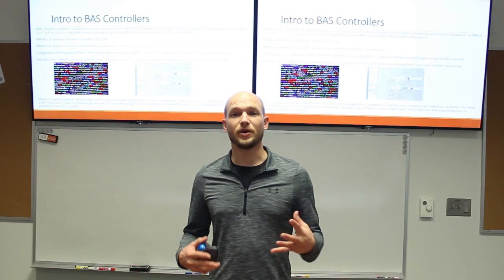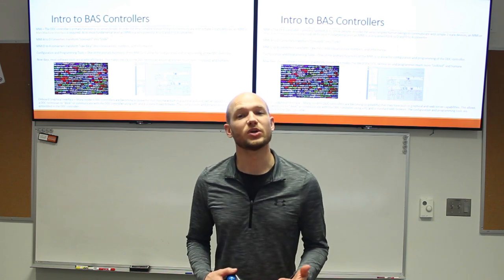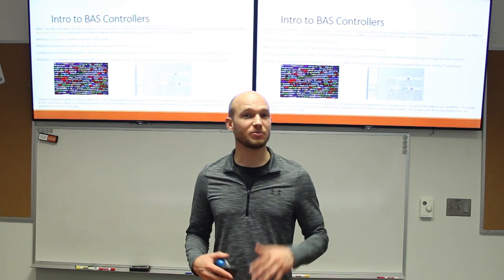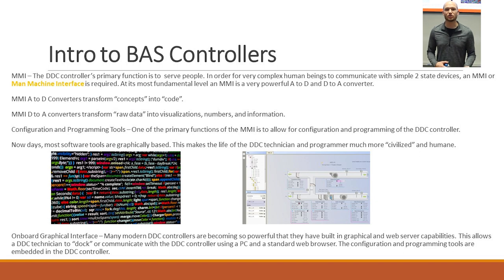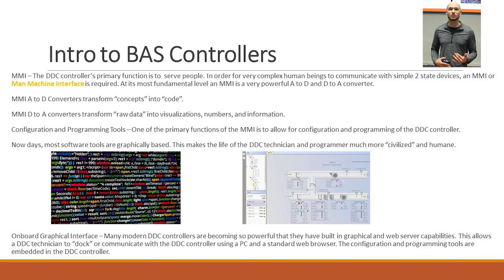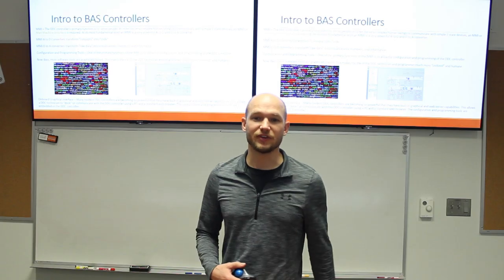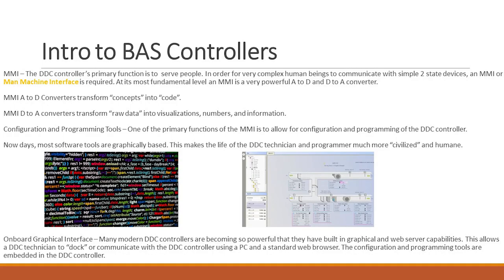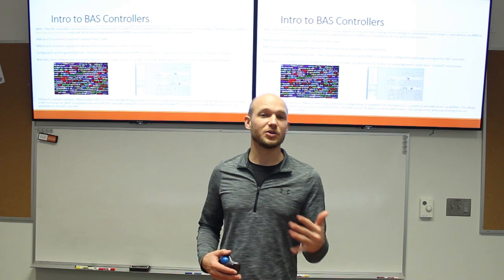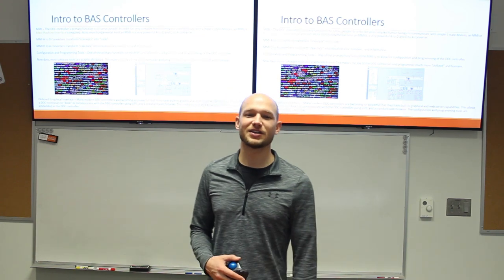The MMI is what really makes the controller work — this is one of the most important pieces. We don't understand zeros and ones. The A-to-D converters transform concepts into code, and then the D-to-A converter transforms that raw data into visualizations, numbers, and information that humans understand. You can see all the code here, and then the graphics — what is behind these graphics is that code, zeros and ones that we don't understand, but presented as a graphic we can.